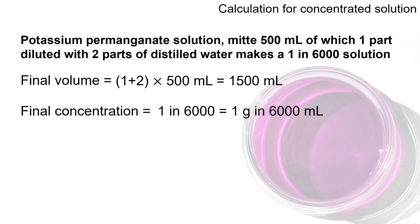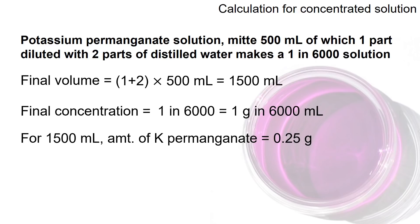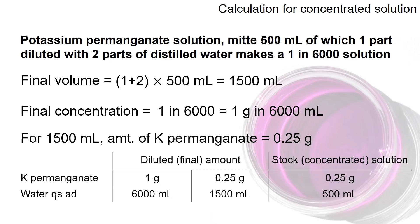For 1500 ml of this final solution, we will have 0.25 grams of potassium permanganate. In table form: for 6000 ml you need 1 gram, so for 1500 ml you need 0.25 grams. This 0.25 grams belongs to three parts of the solution, but the potassium permanganate only comes from one part of the concentrated solution.